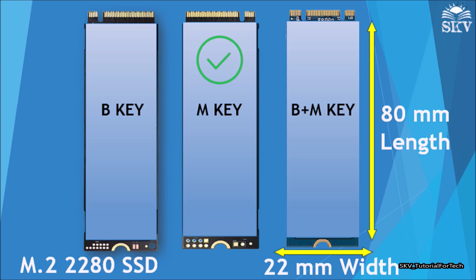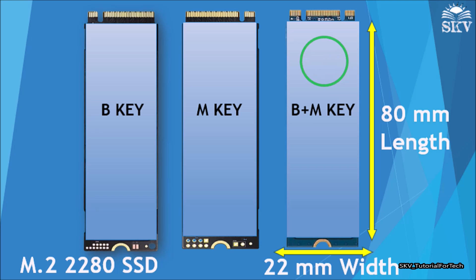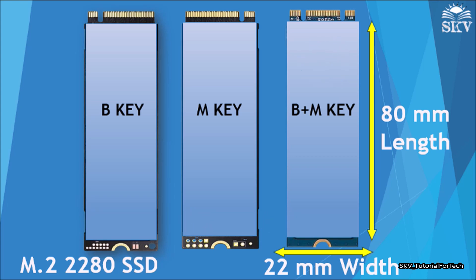If you see B and M-keyed slots — notches for both B and M-keys — this means it can accept both B-keyed and M-keyed modules. These slots are more versatile and can accommodate both SATA and NVMe SSDs. However, they may have limitations on the maximum number of PCIe lanes supported for NVMe drives compared to M-key slots.